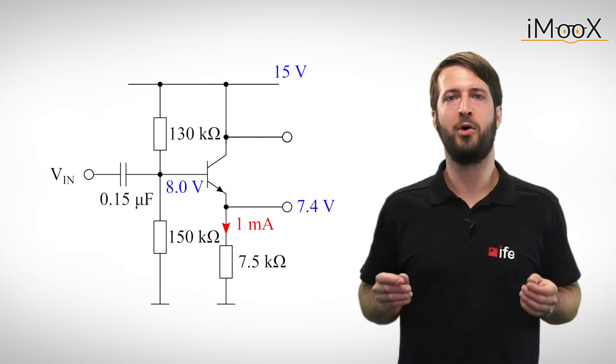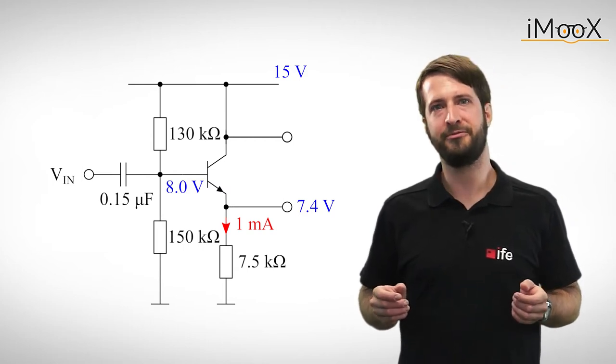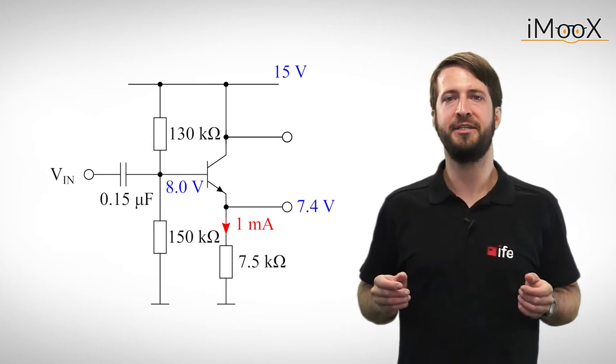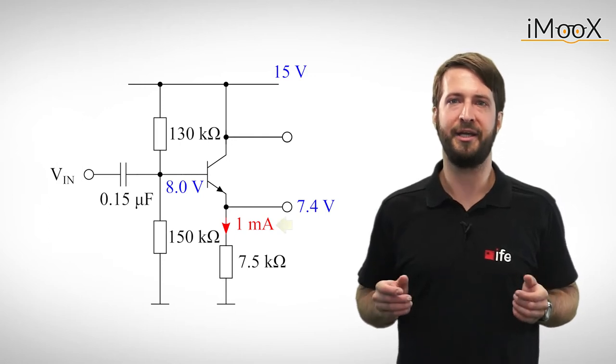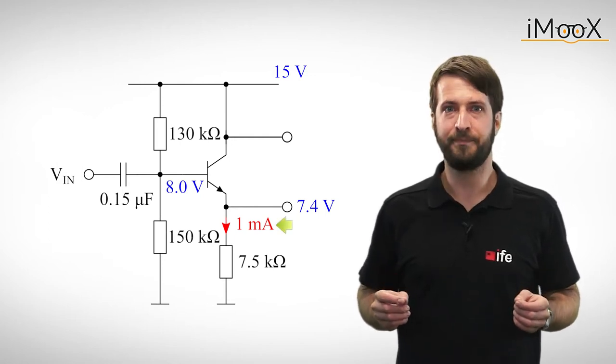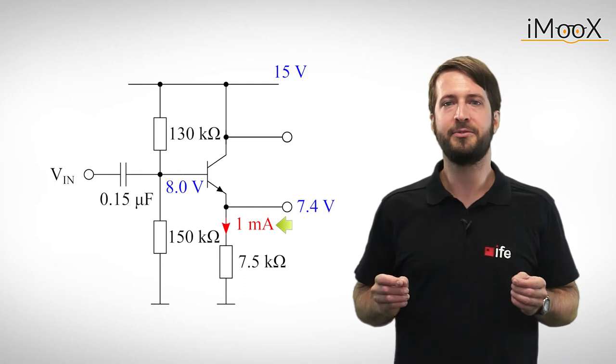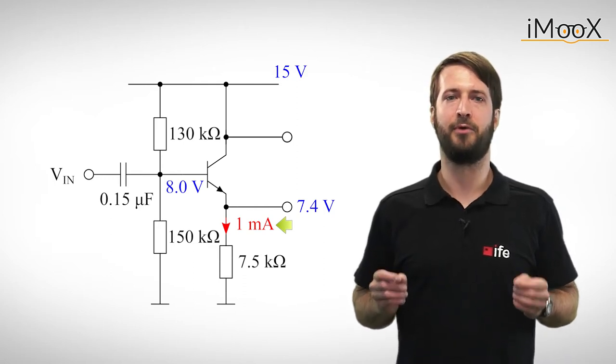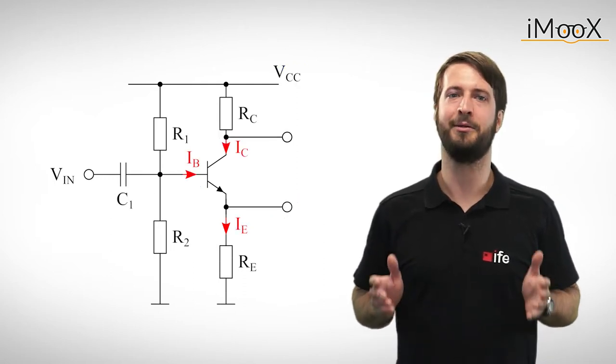If we want to amplify a small AC voltage, like a microphone signal, we first need to transform the output current IE into a voltage. And what's the easiest way to transform a current into a voltage? Yes, we need a resistor.